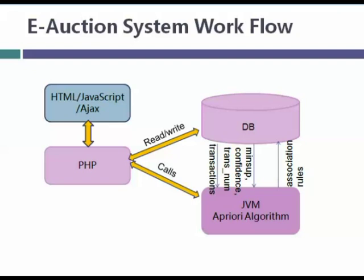PHP also calls the APRU algorithm, which is written in Java. The JVM is launched every time a user finishes a checkout, and the APRU algorithm runs asynchronously. It takes minimum support, confidence, and transaction numbers along with the transactions from the database as input. It then generates association rules, which are written back to the database. PHP then reads those association rules and displays them on the website.